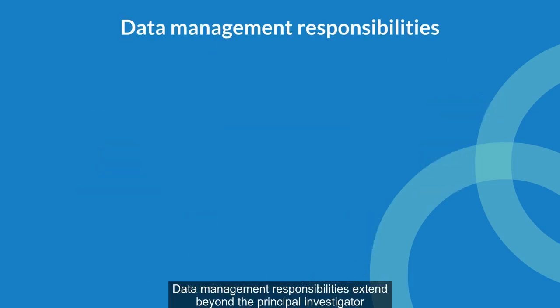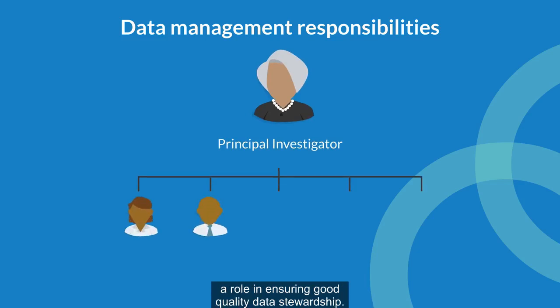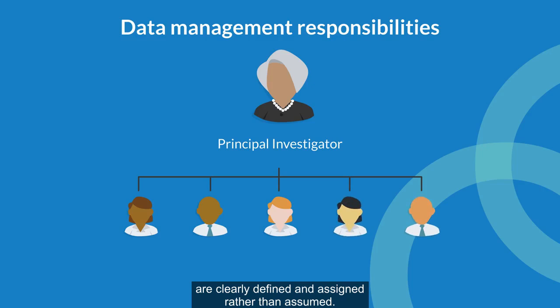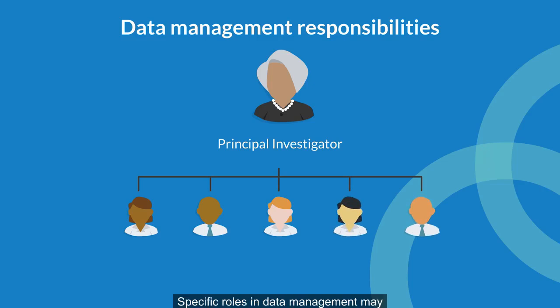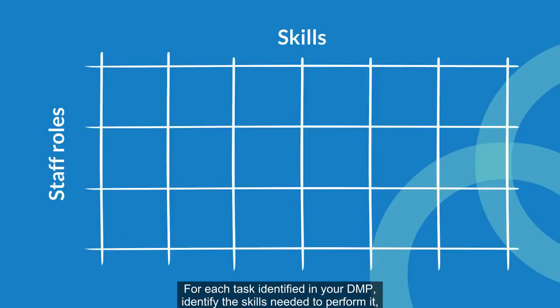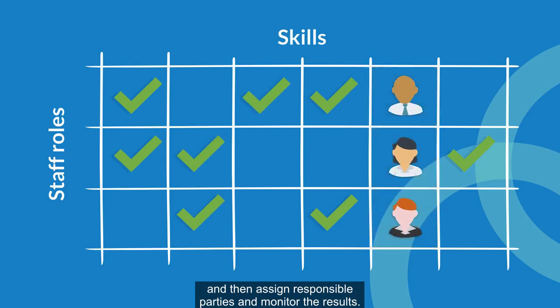Data management responsibilities extend beyond the principal investigator to include various parties involved in the research process and those who play a role in ensuring good quality data stewardship. It is essential that the roles and responsibilities of data management are clearly defined and assigned rather than assumed. Specific roles may include a project manager, data manager, and data entry operator. For each task identified in your DMP, identify the skills needed, match them with available staff, identify any gaps, and assign responsible parties and monitor the results.